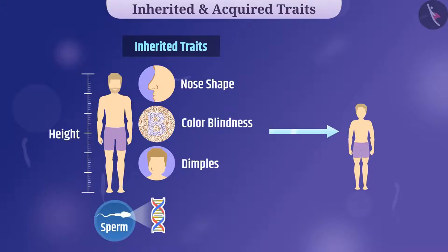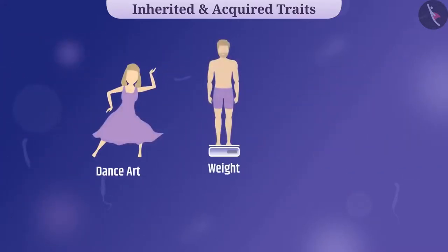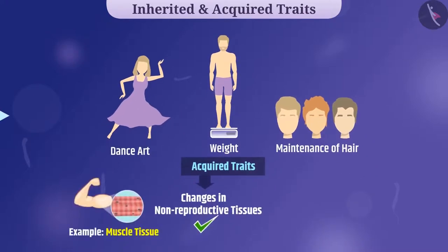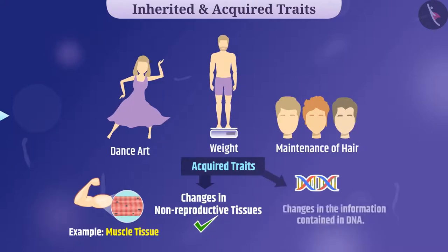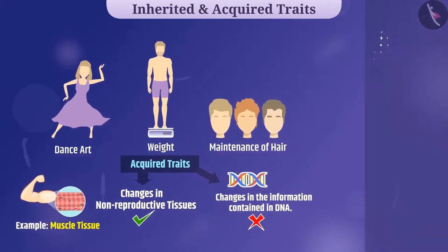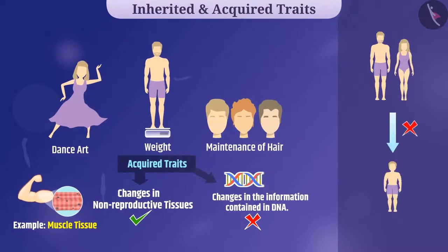Therefore, inherited traits are transmitted from one generation to the next, which takes organisms toward evolution. Those traits like dancing ability, weight, and maintenance of hair — which an organism acquires during its lifetime — are called acquired traits. Acquired traits lead to changes in non-reproductive tissues, but do not cause changes in the DNA of the gametes. Hence, there is no inheritance of acquired traits from one generation to the next.